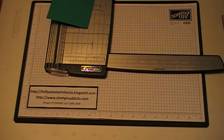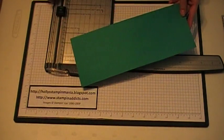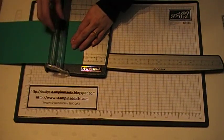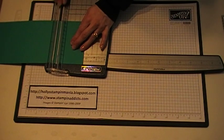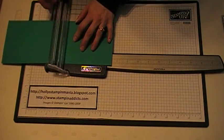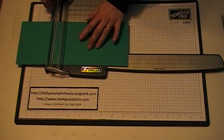First thing you want to do is cut a piece of card stock four and a quarter by eleven. I took a piece of taken with teal, and then you're going to score it at two and three quarters, and then at five and a half, and then at eight and a quarter.